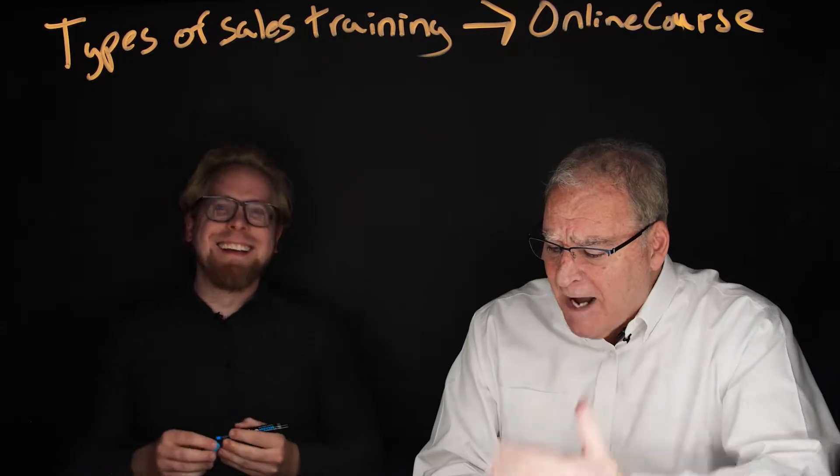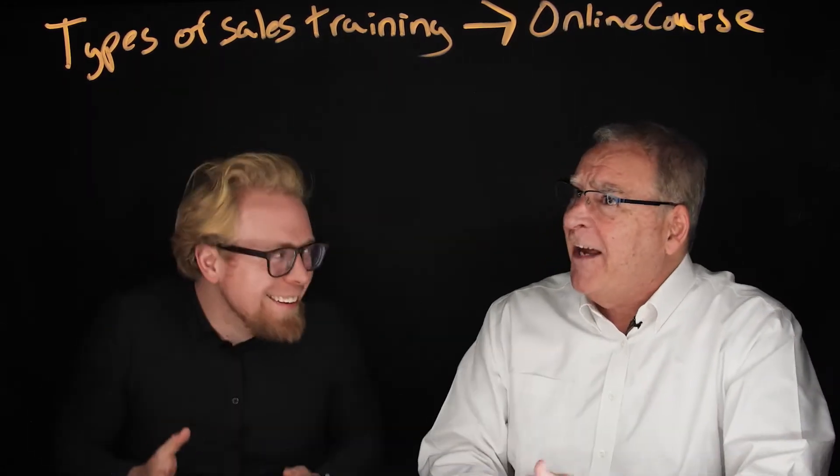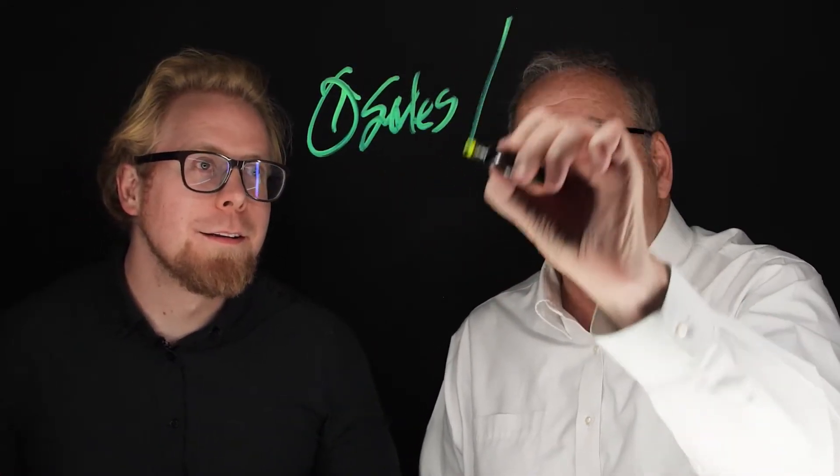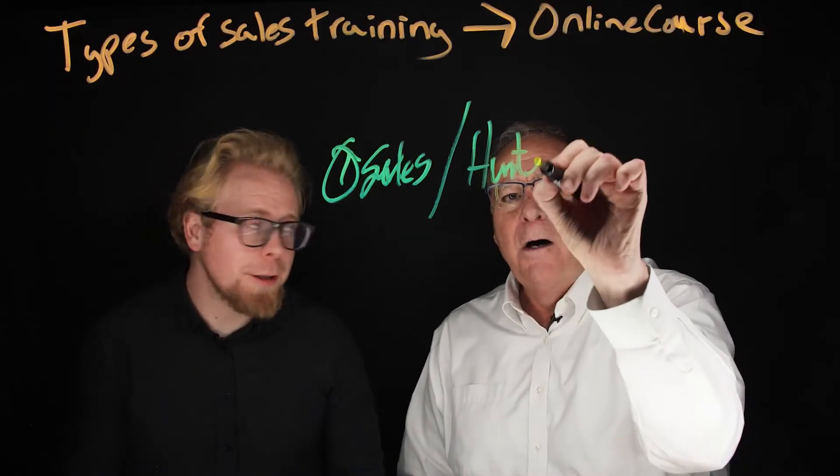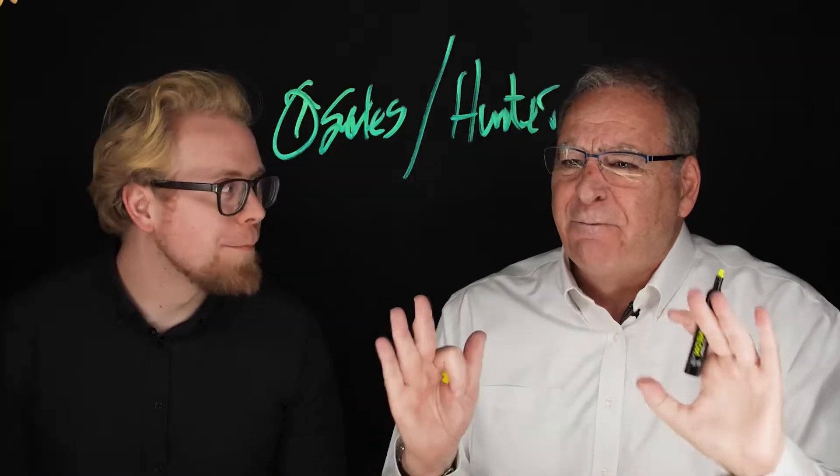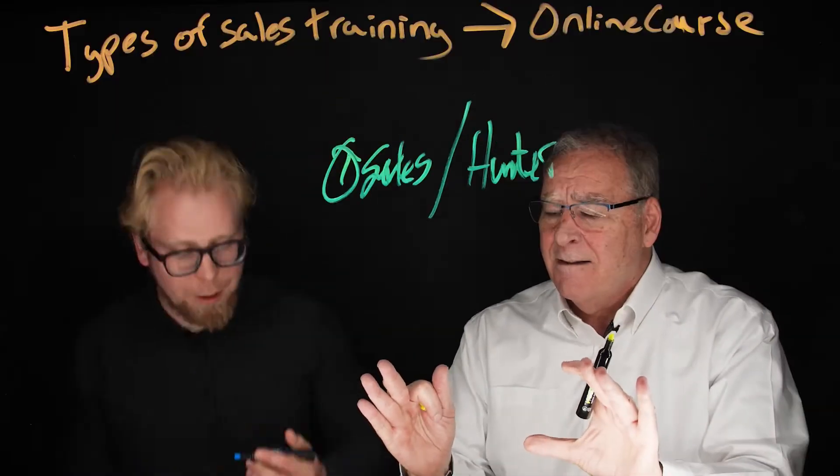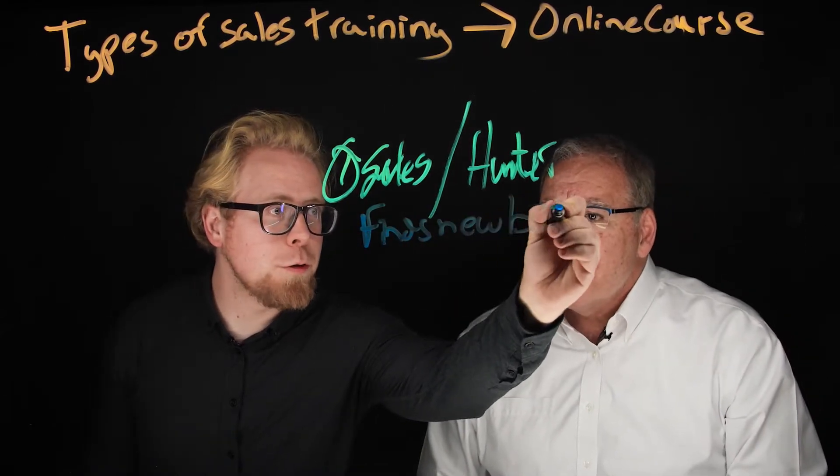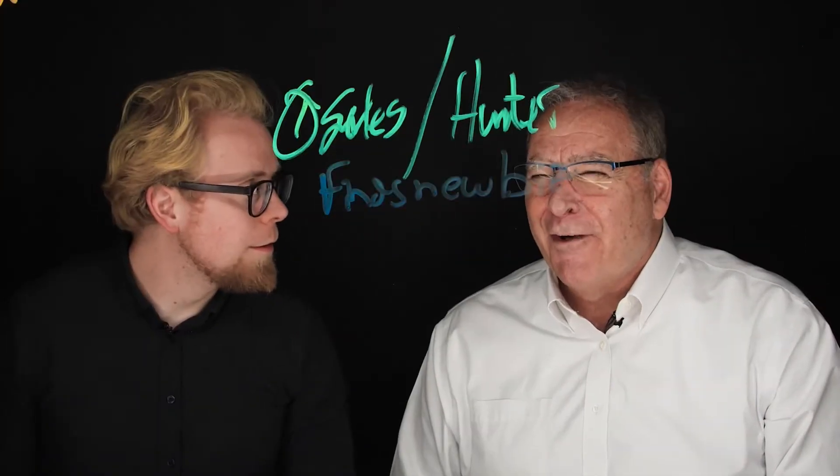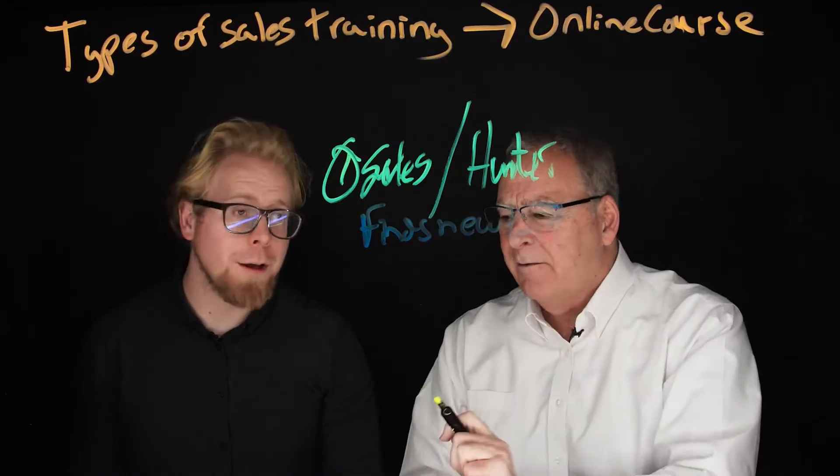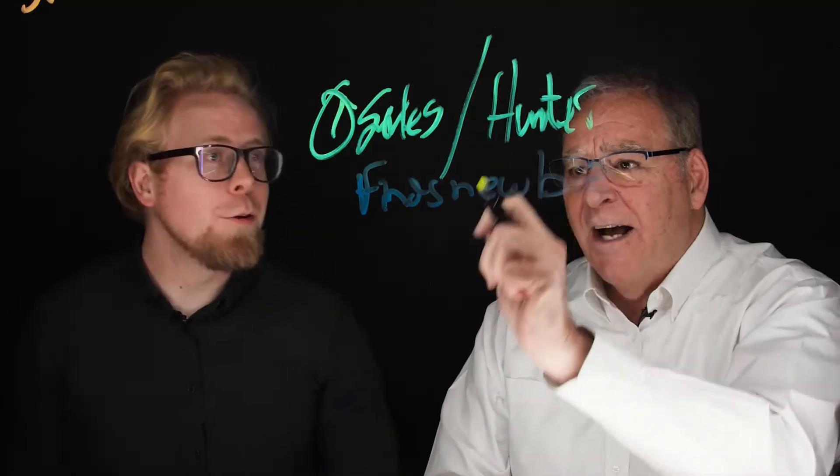All right, let's talk about the types of sales training. The first one is sales hunters. The hunter is somebody who goes out and 100% of the time finds new business. They're hunting, and if they don't do that, they lose their job.